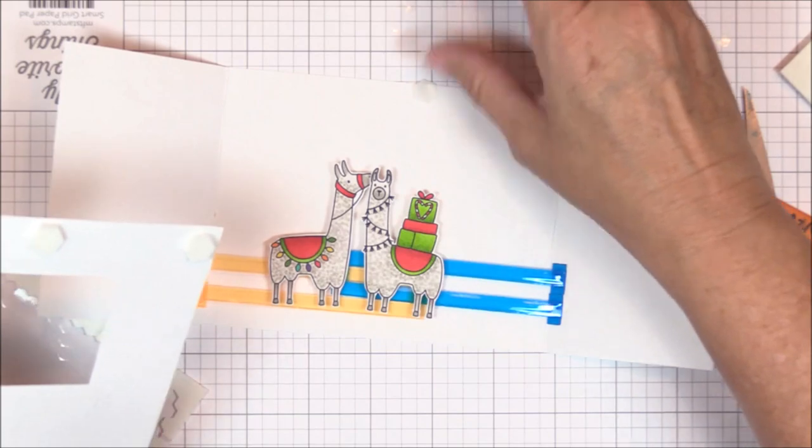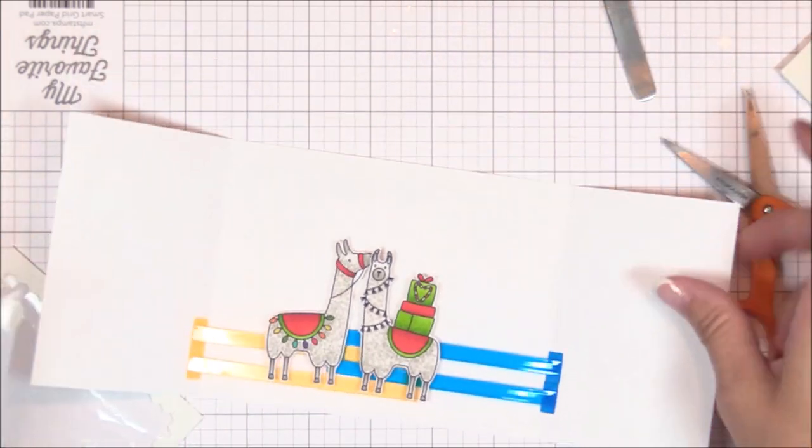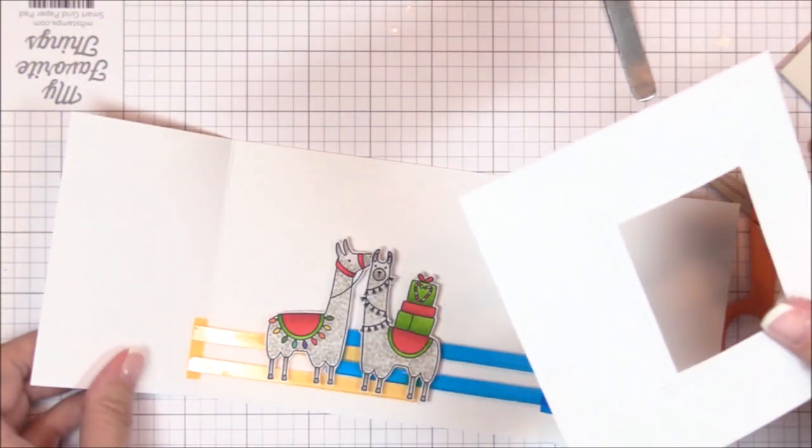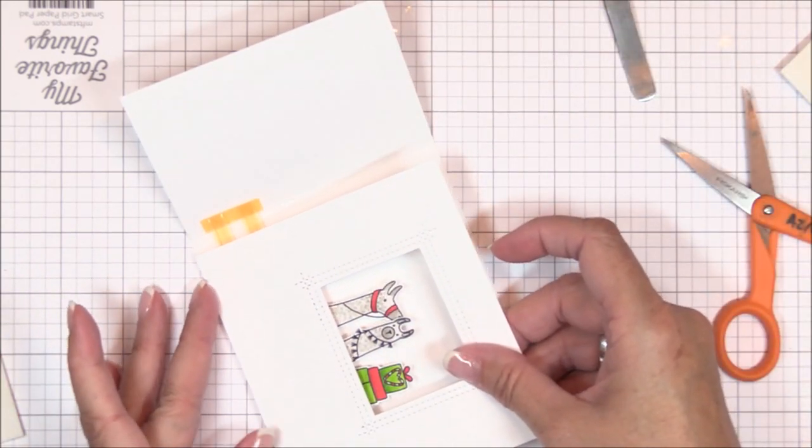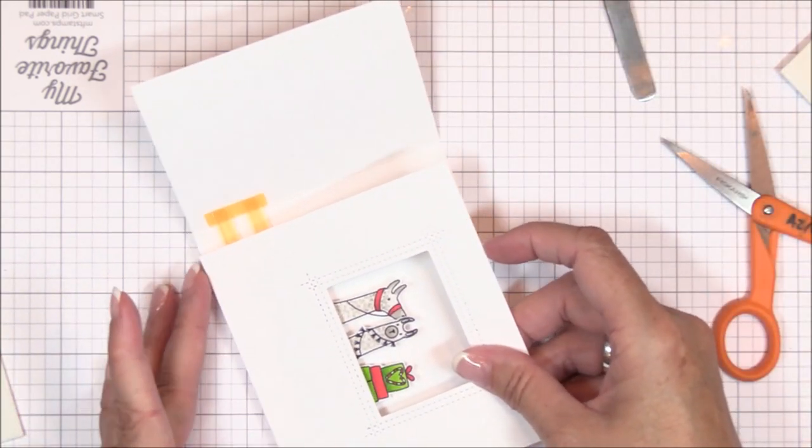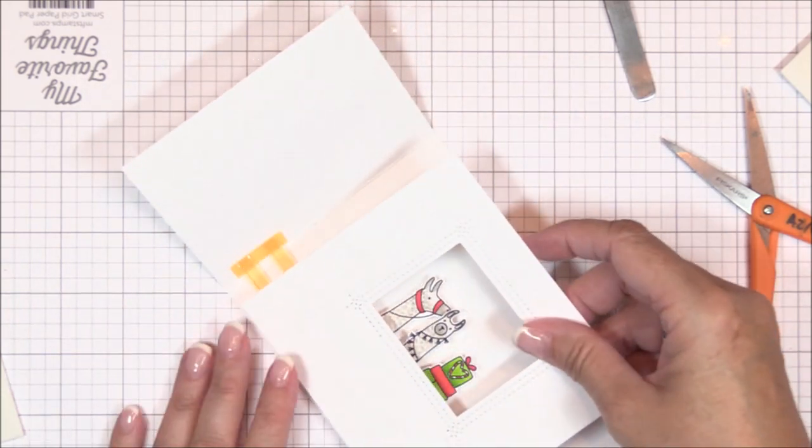You'll also need to make sure that you're not placing any adhesive in areas that will impede the mechanism and your characters from moving properly. Here I used larger foam squares at the top and smaller ones at the bottom since my mechanism is so close to the bottom of the card base.